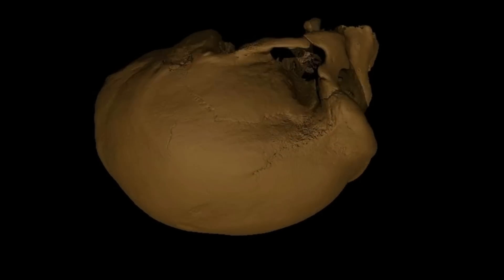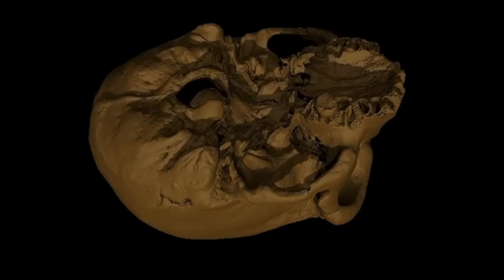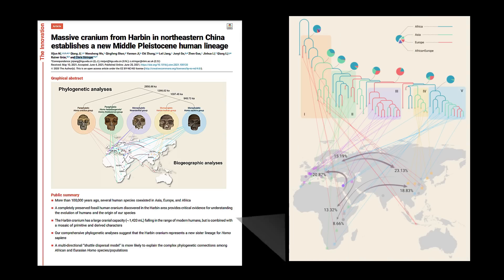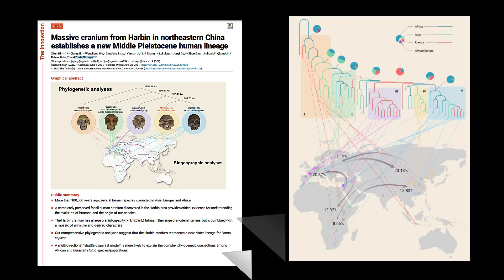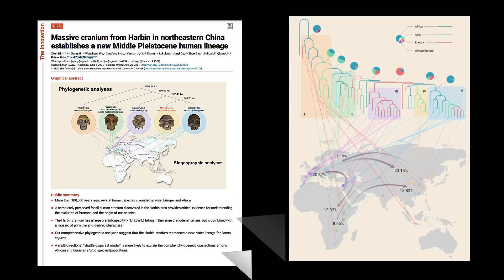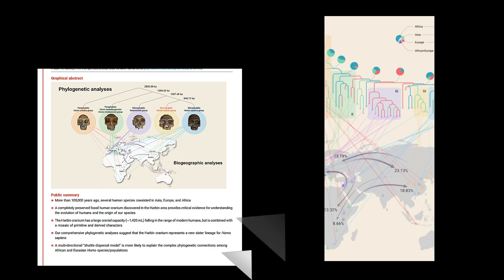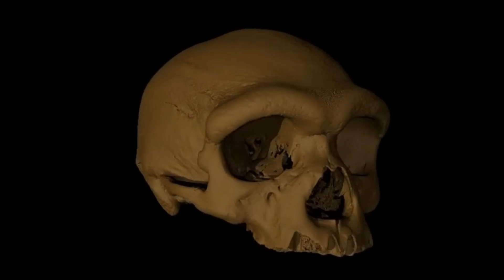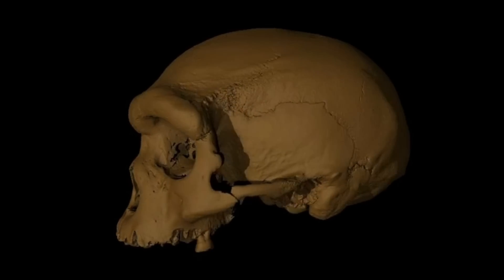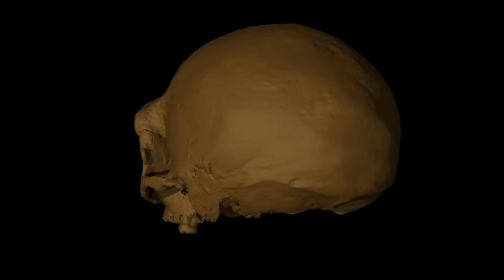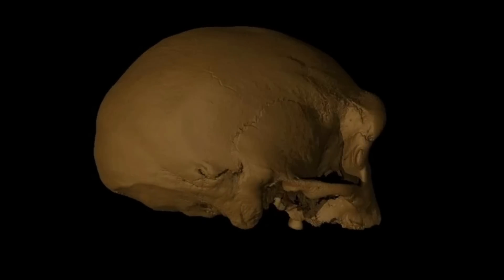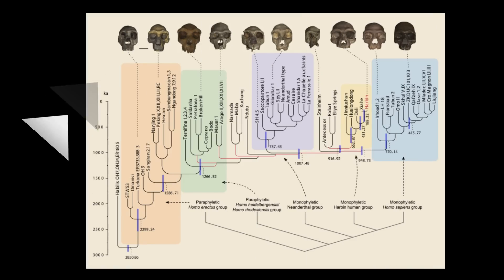The argument for reclassifying Homo erectus who lived after 800,000 years ago as Homo sapiens erectus hinges on overlapping morphological and genetic evidence suggesting a closer relationship between late Homo erectus populations and early Homo sapiens than previously assumed. This reclassification also supports the shuttle dispersal model of human evolution discussed earlier. According to another peer-reviewed study in the journal Science, human skin tone has varied for 900,000 years, and both dark and light ancestral gene variants are shared between modern humans and archaic hominids such as Neanderthals and Denisovans, suggesting a shared common ancestry for this trait before the split of the three hominin lineages.